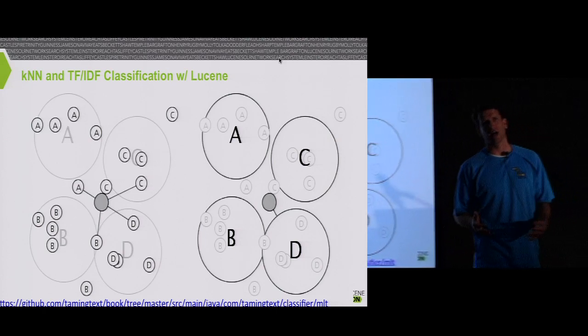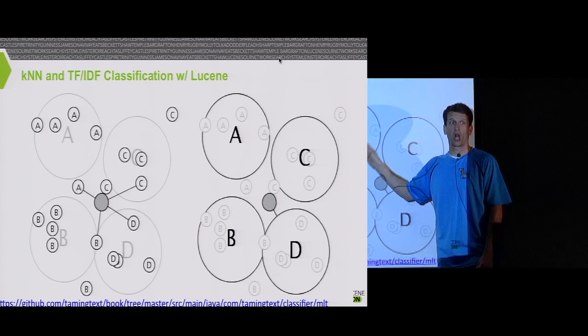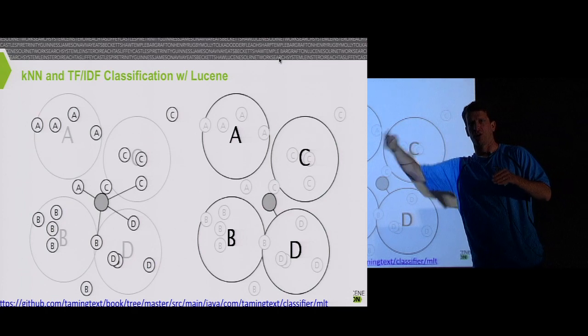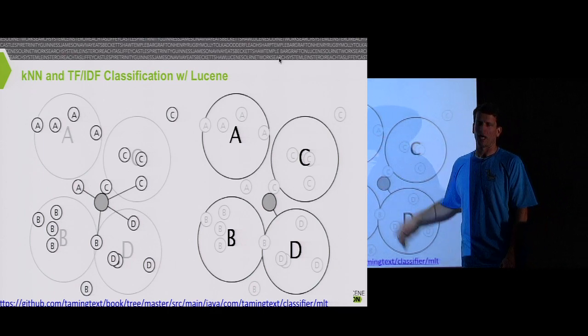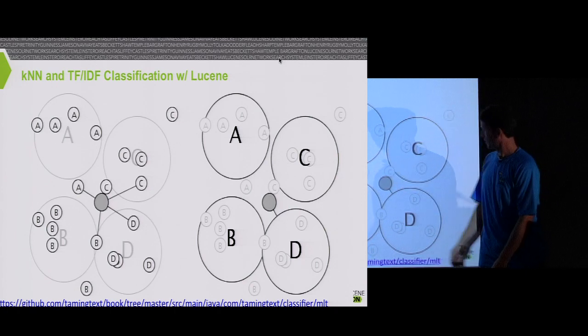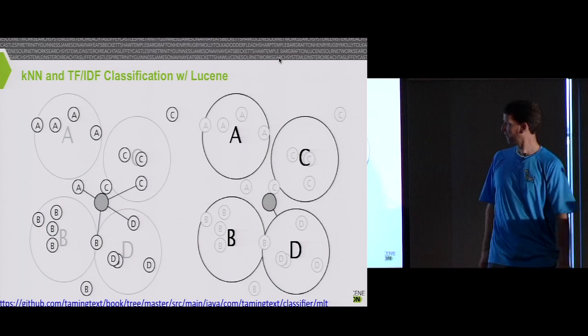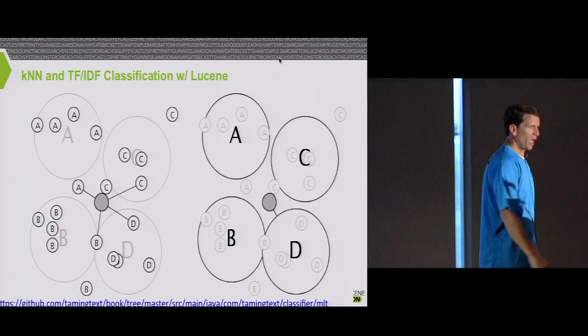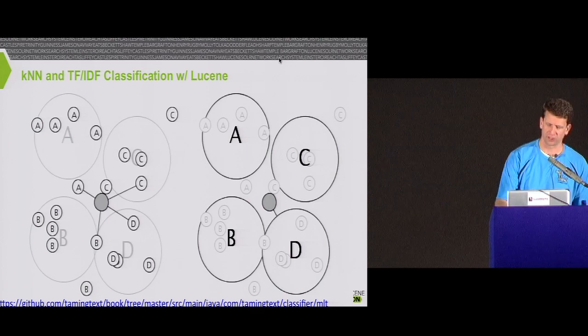The TF-IDF one is essentially a slightly different kind of retrieval problem in that what I do here is I take all of the documents that are labeled with A and I concatenate them together into one document. So it says this one document has all of the features of all the documents with this same label. And then it just becomes a straightforward retrieval problem of take my document in, get me back the ones that match based off of the full TF-IDF ranking, and the top one is my label.